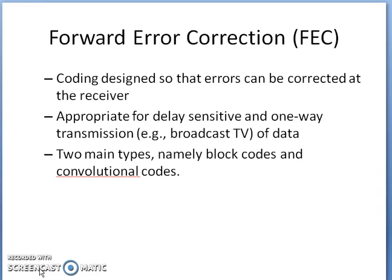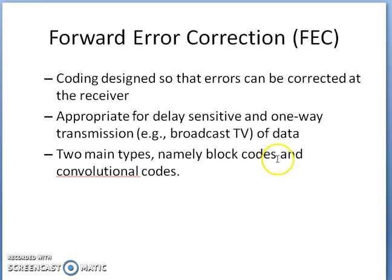For forward error correction using error correcting codes, this mechanism is used for delay-sensitive and one-way transmission systems like broadcast TV or one-way data transmission. There are two types of codes used for forward error correction: block codes and convolutional codes. In this lecture we will specifically discuss block codes.